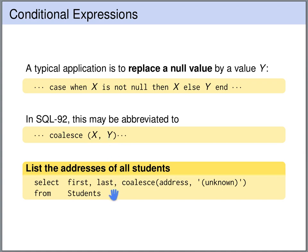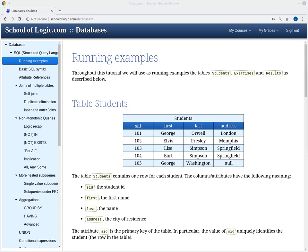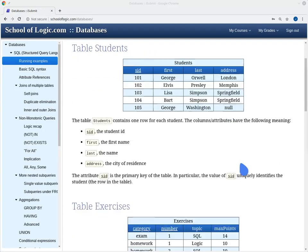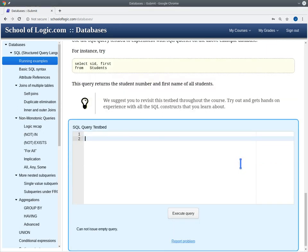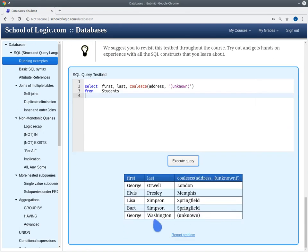For instance, if we want the addresses of all students, we query the students table and select the first and last name. Because the address can be null — unknown or not filled in the system — we use COALESCE(address, 'unknown'), so whenever the address is null the default value 'unknown' is filled instead, which is nicer to read for humans. In the students table, George Washington has a null address. Using the query from the slide, we replace the null value with 'unknown', and the result table now shows 'unknown' as George Washington's address.